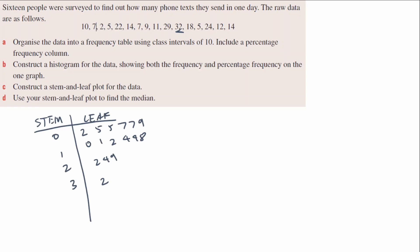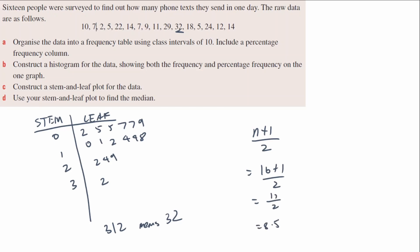Include a key — for example, '3|2 means 32'. To find the median with 16 data points: (16 + 1) ÷ 2 = 8.5, so the median is between the 8th and 9th values. Counting through, the 8th value is 11 and the 9th is 12, so the median is (11 + 12) ÷ 2 = 11.5. Give yourself a tick if you got that correct.